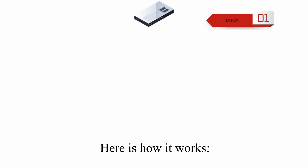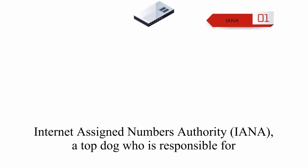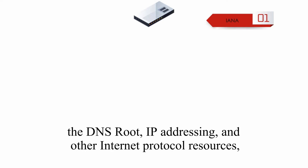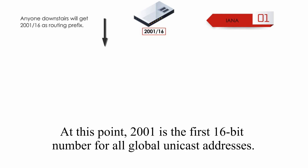An IPv6 global unicast address is generally assigned in a hierarchical manner. Internet Assigned Numbers Authority, or simply IANA, a top dog who is responsible for the DNS root, IP addressing, and other internet protocol resources, sits at the very top, assigning the first 16-bit to anyone downstairs. At this point, 2001 is the first 16-bit number for all global unicast addresses.